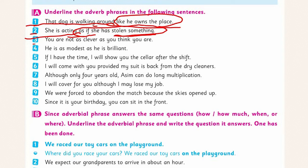Sentence 3: 'You are not as clever as you think you are.' The adverbial phrase is 'as clever as you think you are.' Sentence 4: 'He is as modest as he is brilliant.' The adverbial phrase is 'as he is brilliant.'